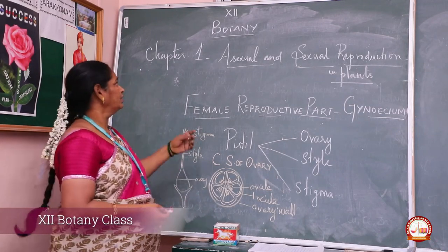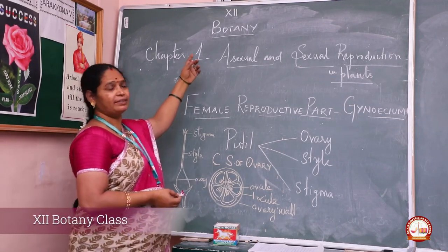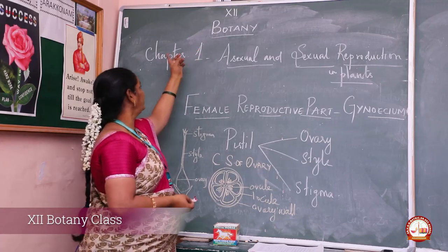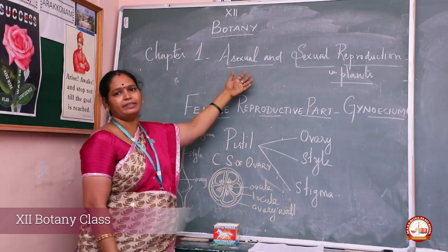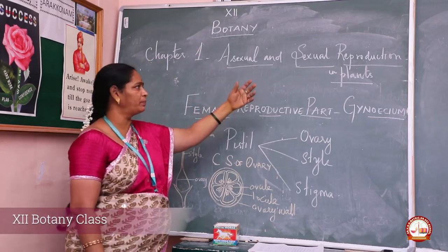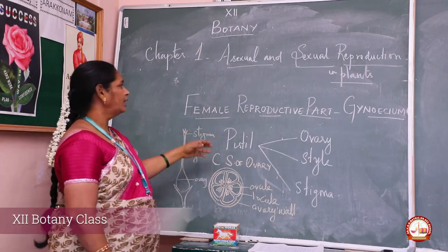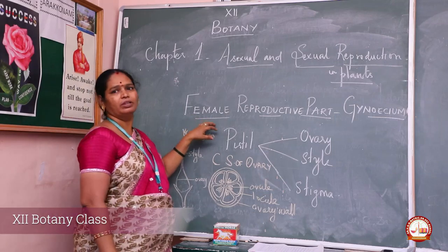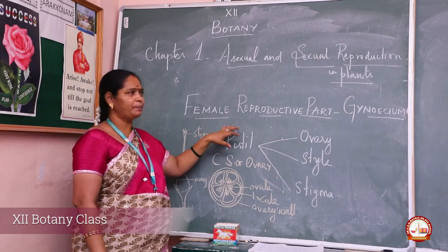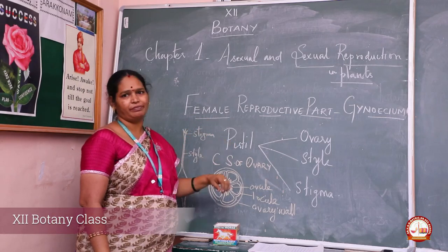Hello children, here we are going to have a class on what we mean in chapter 1: asexual and sexual reproduction. In that topic, we are going to be learning about the female reproductive part of the flower.